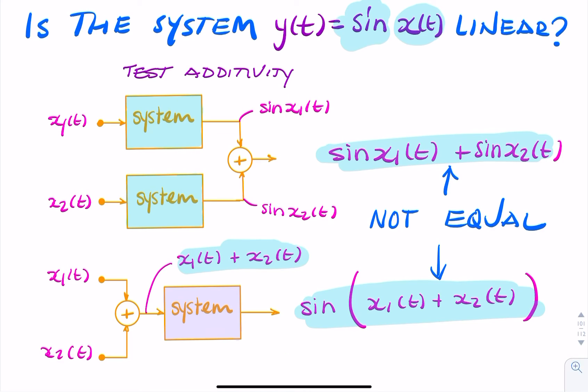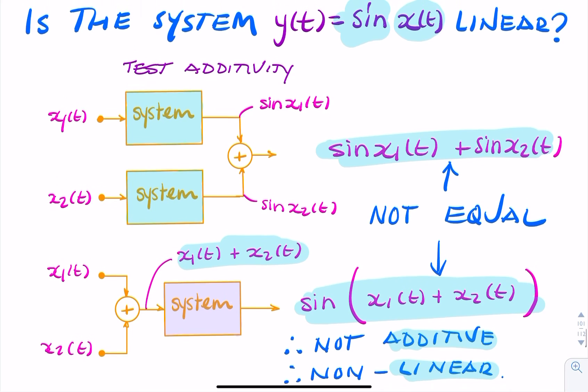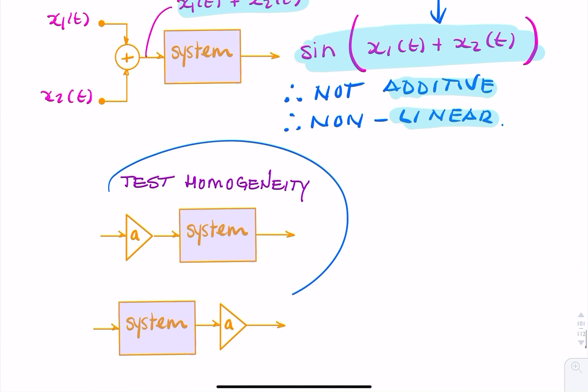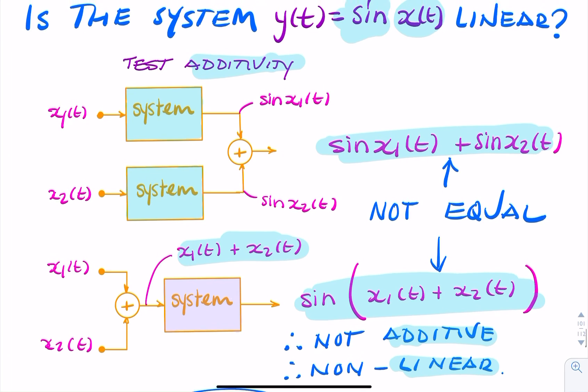Therefore, the system is non-linear, because additivity is a condition for linearity. We've just shown that the system is non-additive and non-linear by applying that test. We didn't need to carry out the homogeneity test because it failed the test of additivity.